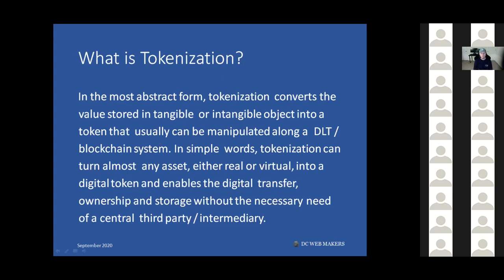Tangible assets are things you can hold — like real estate. Intangible assets are like logos or things with intrinsic value. The value of those assets will be manipulated — for example, an asset worth one million dollars can be translated into tokens, where that asset value is divided into different small pieces or tokens that someone can own or buy.